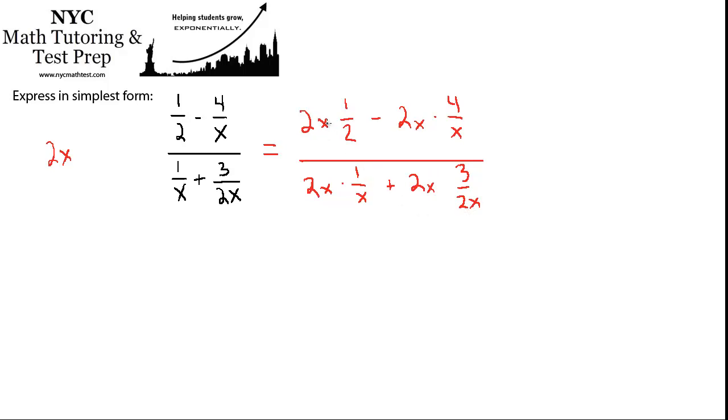Alright, so now let's see these things cancel. Here we have 2x times 1 over 2, right? You can imagine that this is over 1. So you just multiply across, numerator times numerator, denominator times denominator. The 2's are going to cancel, and you're going to end up with x times 1, which is x over 1. So that whole thing just becomes x.